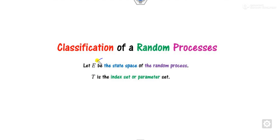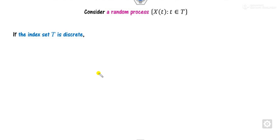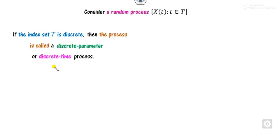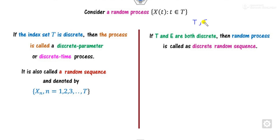What are the classifications of the random process? Let E be the collection of all outcomes from the random experiment, and capital T be the index set depending on the time factor. If T is discrete — whatever time period is considered as discrete — the process is called the discrete time process, or discrete parameter process, also called a random sequence, defined for n = 1, 2, and so on.